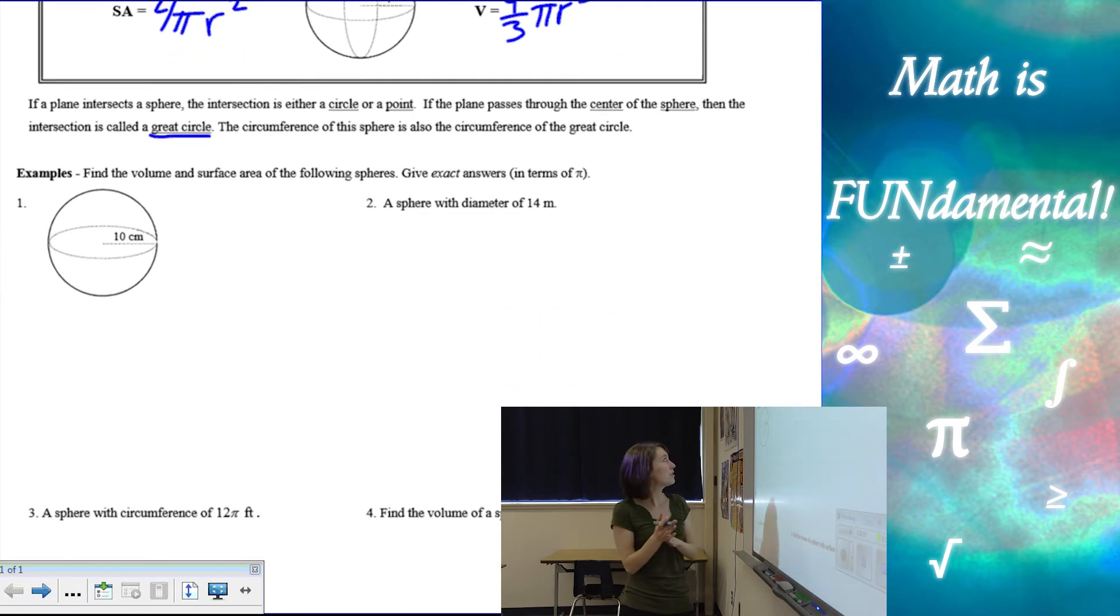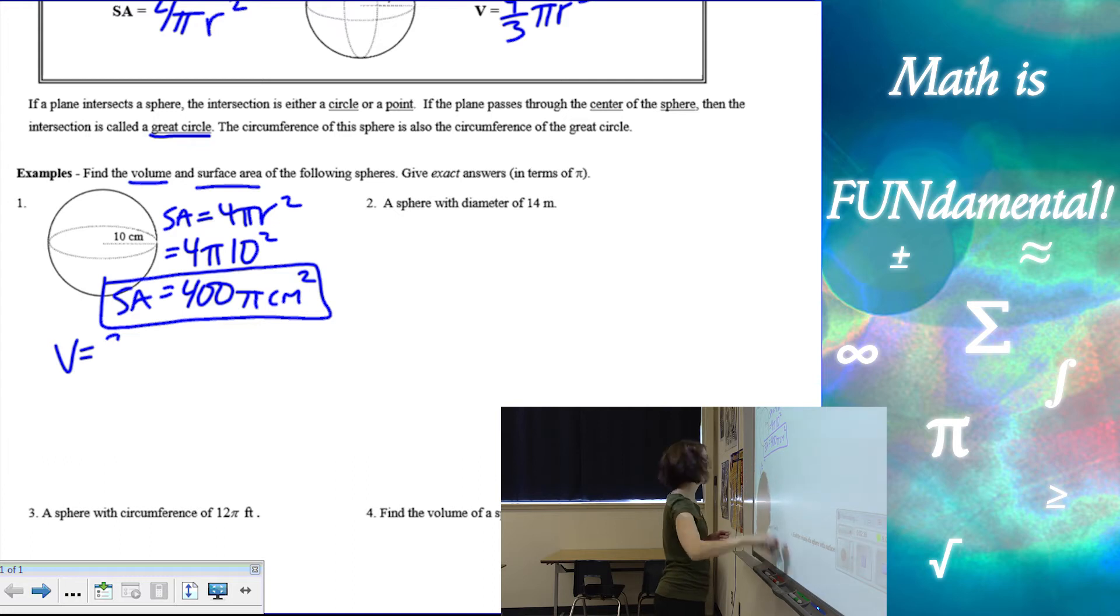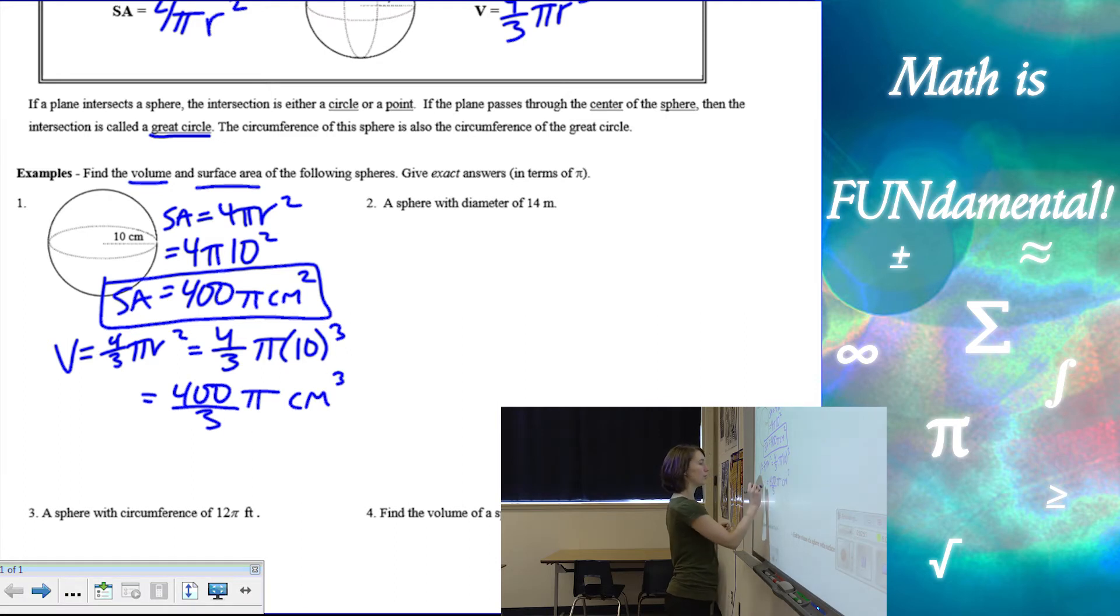Alright, so let's look at a couple examples. The first one, we want to find volume and surface area of the sphere, practicing both. So surface area, we have 4 pi r squared, so my radius is 10, that's going to give me 4 pi times 10 squared, which is 400 pi centimeters squared. And then for volume, we have 4 thirds pi r cubed, so that's 4 thirds pi times 10 cubed. It says give exact answers, leave in terms of pi, so that's just going to be 400 over 3 pi centimeters cubed.